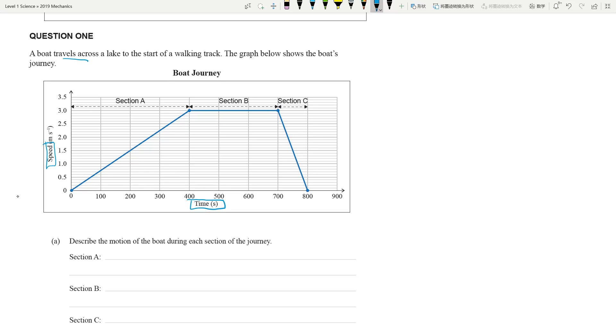When you're trying to do this particular achieve question here to describe the motion of the boat during each of the sections of the journey, it will be different if this was a distance-time graph. But looking at this speed-time graph, for Section A, you have a constant increase of speed over time, so this is constant acceleration.